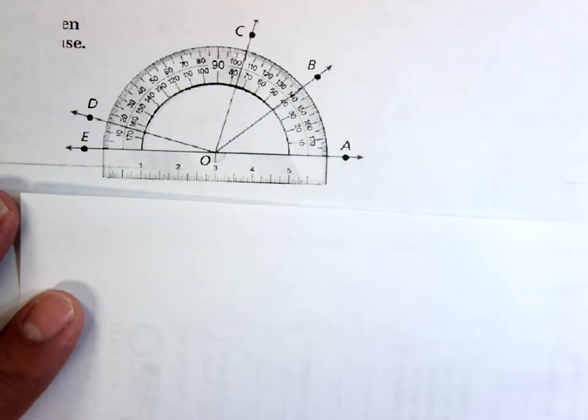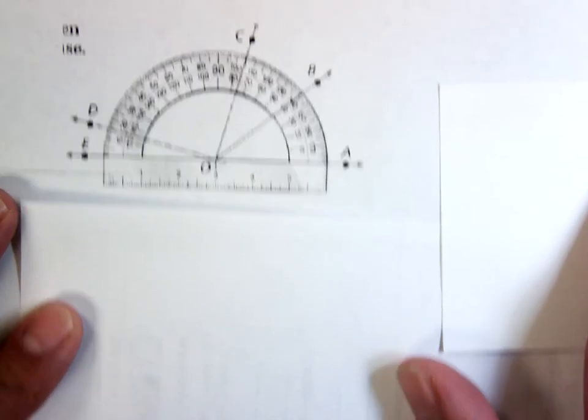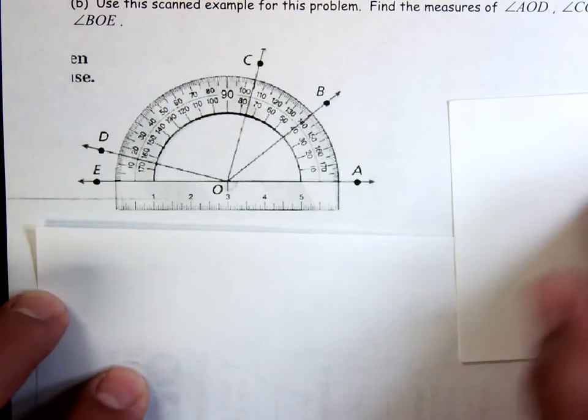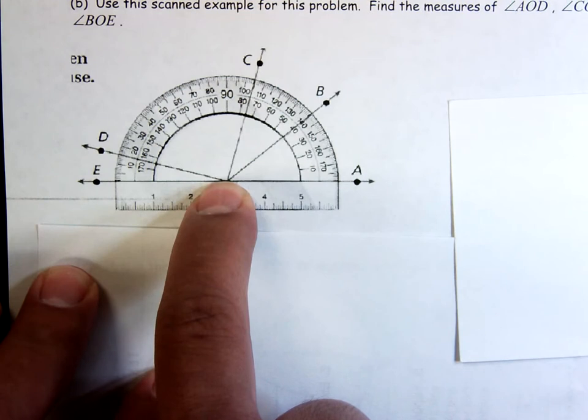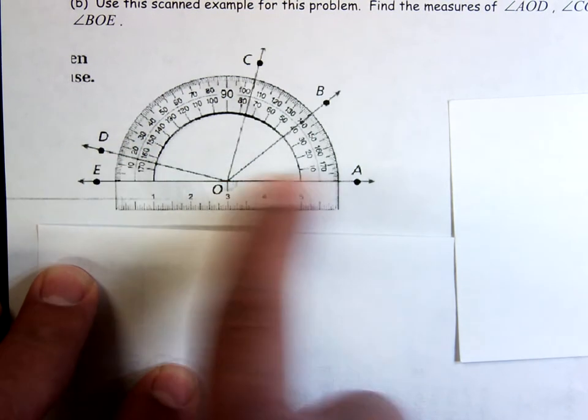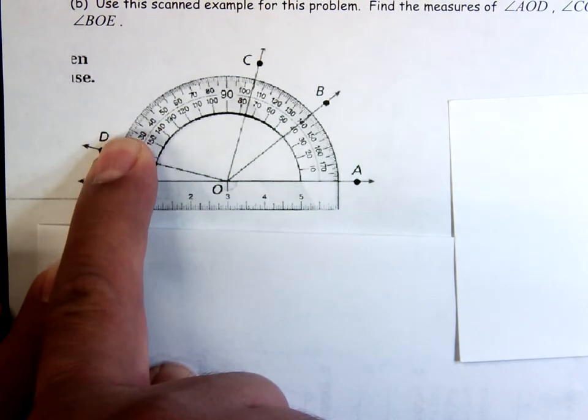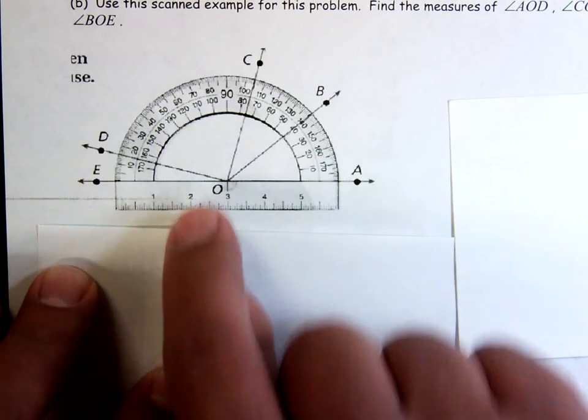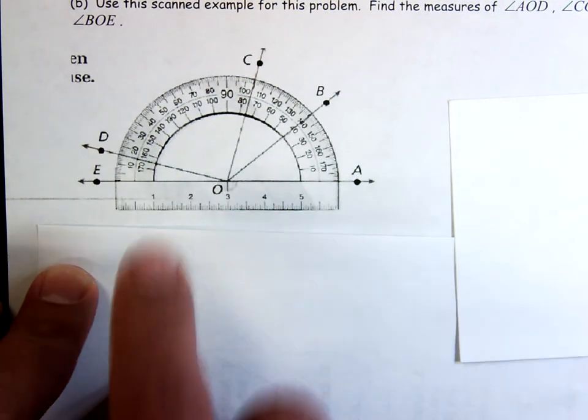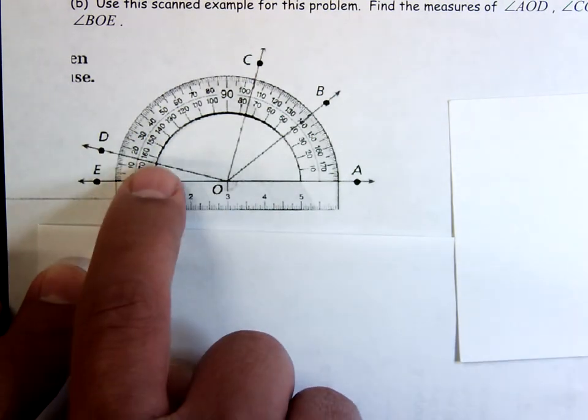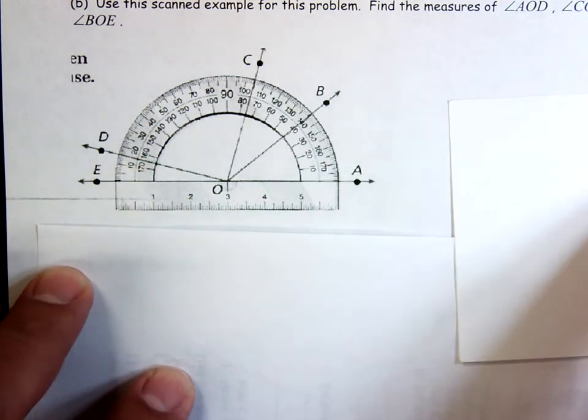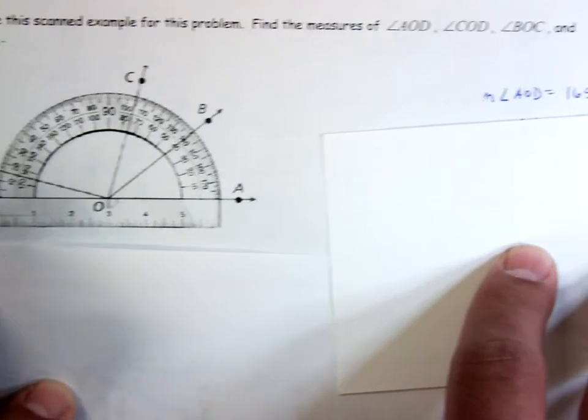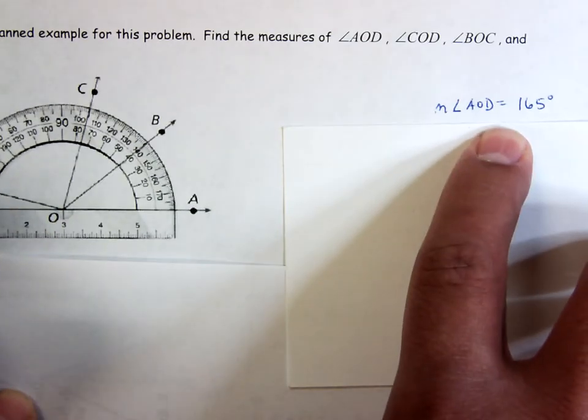First one says find the measure of angle AOD. So AOD, first I find it in the picture. Put your fingers on it. AOD. That is bigger than a 90 degree angle, so I know to look at the larger set of numbers. Looks like it crosses - there's 160, there's 170, it's in between, so it's 165 degrees. Measure of angle AOD is 165 degrees.